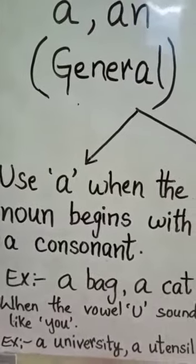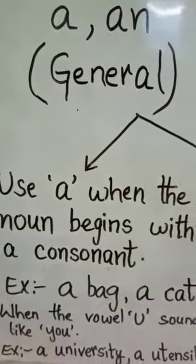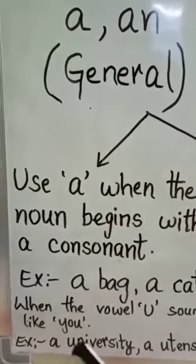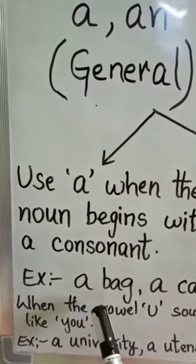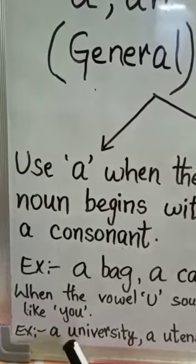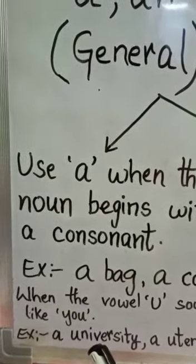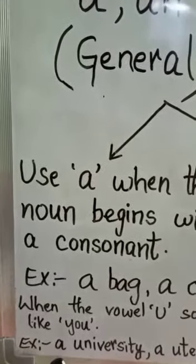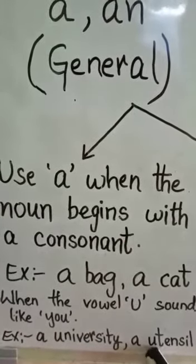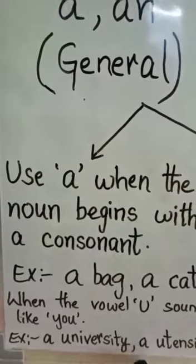And one more thing you have to remember children, that when the vowel U sounds like you. Here the letter U makes the sound as you. So don't be confused. We have to use before U sound A. Like for example, a university. U is a consonant sound. Even though it is a vowel letter, it sounds as you. So that's why we have to use here A. A university. A utensil. Here U makes the sound as you, long U. So that's why we have to use here A. So don't be confused children.